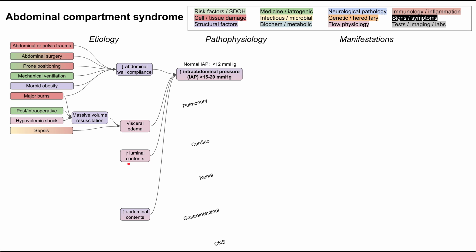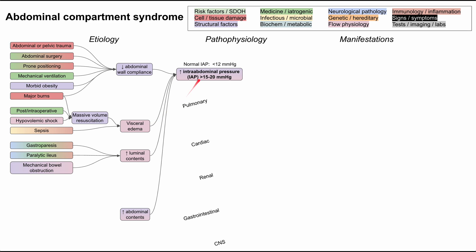The next category is increased luminal contents. Gastroparesis — where the stomach is essentially paralyzed and food backs up — increases stomach contents. Paralytic ileus is similar, with paralysis of the small intestine causing bowel contents to back up. Mechanical bowel obstruction does the same: blockage causes accumulation behind the obstruction, increasing intra-abdominal pressure. These conditions can arise from surgery, neurological pathology like diabetic neuropathy, or inflammatory disorders.